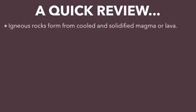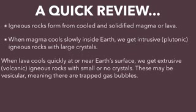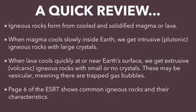So let's recap. Igneous rocks form from cooled and solidified magma or lava. When it cools slowly inside the earth, we get intrusive — sometimes called plutonic — igneous rocks, and they will have large crystals. When lava cools quickly at or near the surface, we get extrusive rocks, also called volcanic, that will have small or no crystals. They may be vesicular, meaning they have some trapped gas bubbles. Page six of the reference tables shows our common igneous rocks and their characteristics, and we'll be studying that chart in the coming days.